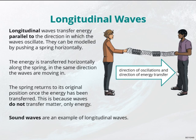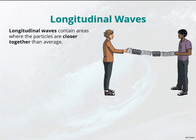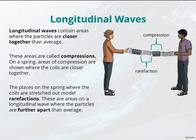As you can see here, we have the direction of the oscillations and the direction of the energy being transferred. Longitudinal waves contain areas where the particles are closer together than average, and areas where the particles are farther apart from each other. These areas of closer particles are called compressions.